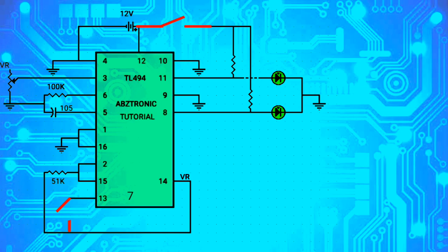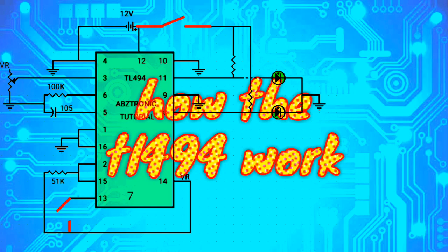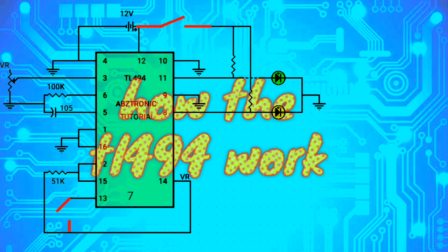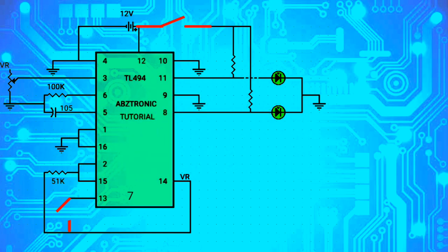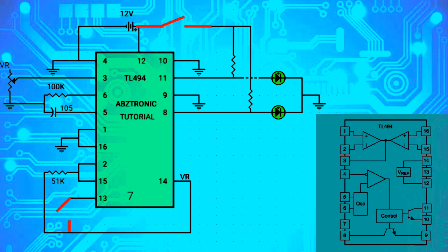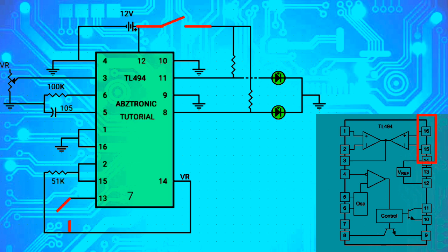Welcome back to Abstract Circuit tutorial. The TL494 IC is a dual inline package with a total of 16 pins, rated voltage from 7 to 40 volts. The IC has built-in two comparators from the internal circuit: pin 1 and pin 2 for comparator 1, and pin 15 and pin 16 for comparator 2.